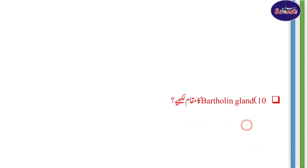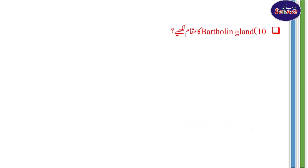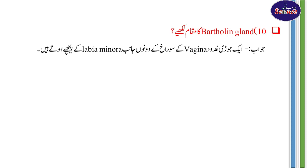Question number 10: Bartholin gland کا مقام لکھیے۔ اس کا جواب ہے: ایک جوڑی غدود، vagina کے سوراخ کے دونوں جانب labia minora کے پیچھے ہوتے ہیں۔ ایک لائن میں اس کا مقام بتایا گیا ہے۔